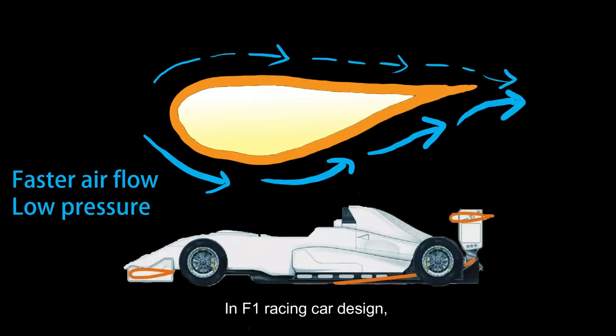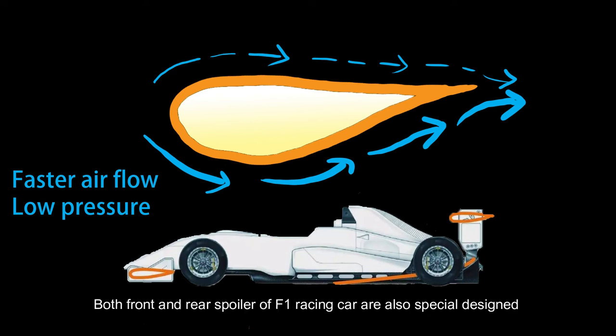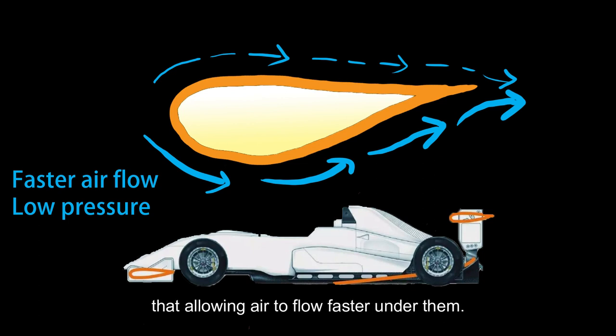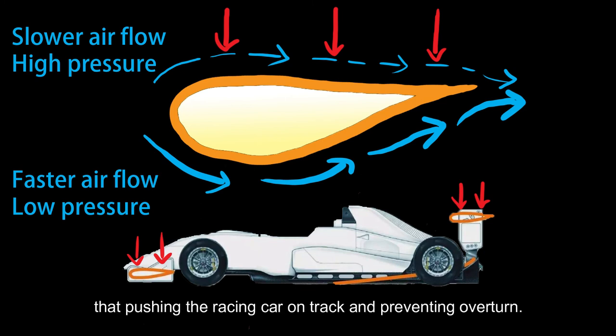In F1 racing car design, it applies the same mechanism as the aerofoil but just reversed. Both front and rear spoilers of an F1 racing car are also specially designed, allowing air to flow faster under them. The slower air flow on the upper side creates high pressure that pushes the racing car onto the track and prevents it from overturning.